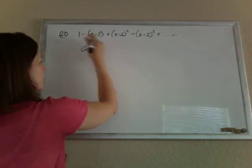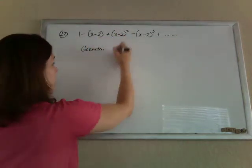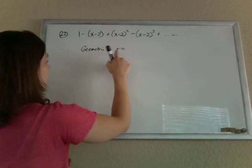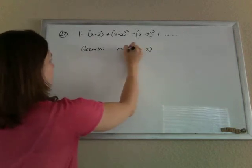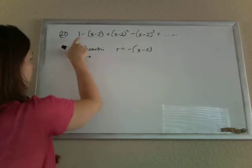It's geometric because we're multiplying by the same thing every time. What are we multiplying by? What's our common ratio? Looks like it's x minus 2, and negative x minus 2 actually.